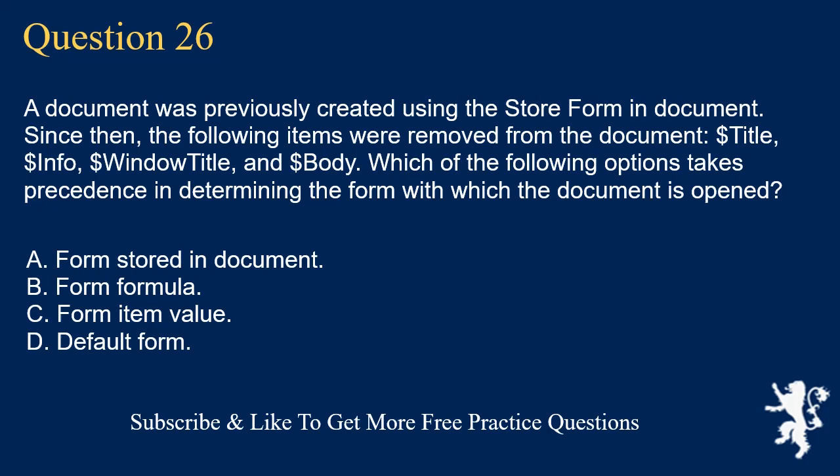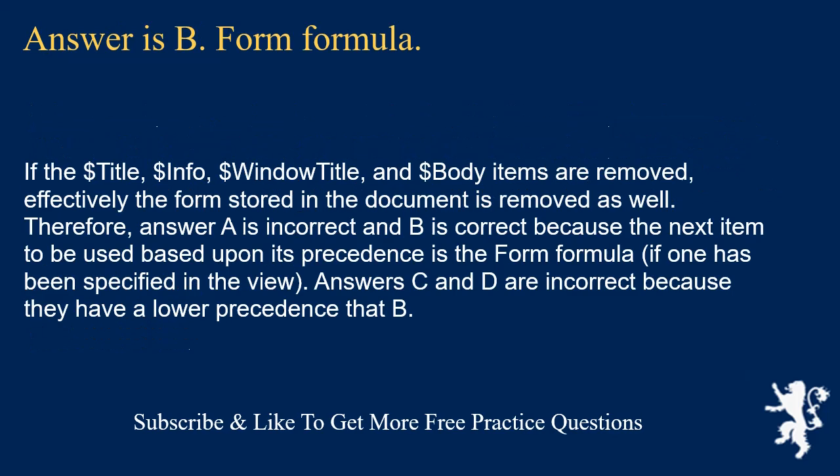Question 26. A document was previously created using store form and document. Since then, the following items were removed: $title, $info, $windowtitle, and $body. Which option takes precedence in determining the form with which the document is opened? Form stored in document. Form formula. Form item value. Default form. Answer is B: Form formula. If the $title, $info, $windowtitle, and $body items are removed, the form stored in the document is effectively removed as well. Therefore, answer A is incorrect and B is correct because the next item based on precedence is the form formula, if one has been specified in the view. Answers C and D are incorrect because they have lower precedence than B.